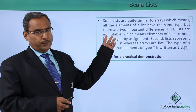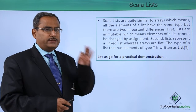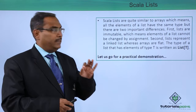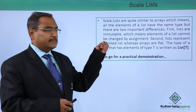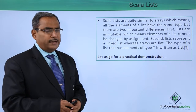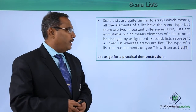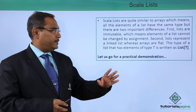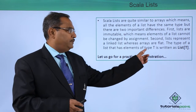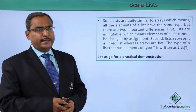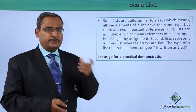First, lists are immutable, that means elements of a list cannot be changed by assignment. Second, lists represent a linked list whereas arrays are flat. The type of a list that has elements of type T is written as List with T in the type bracket.